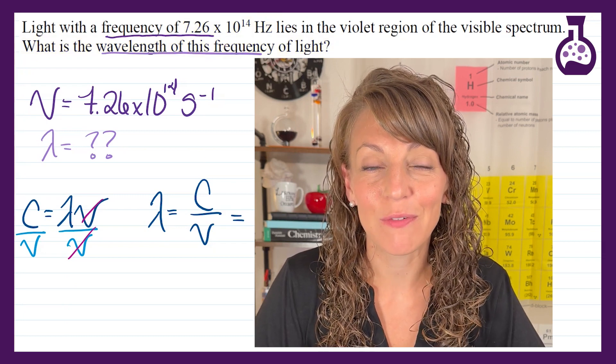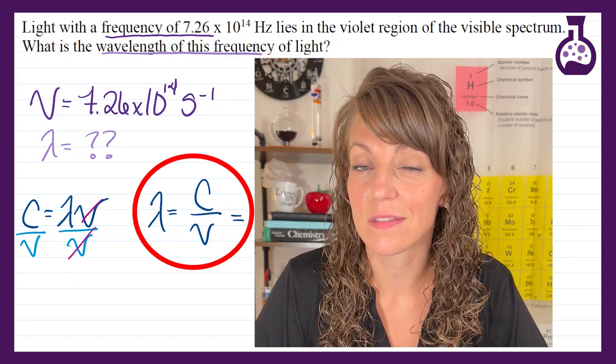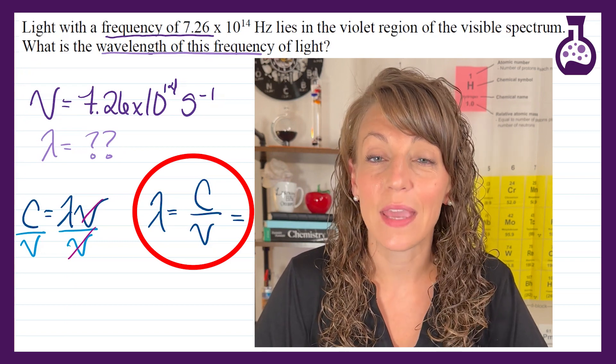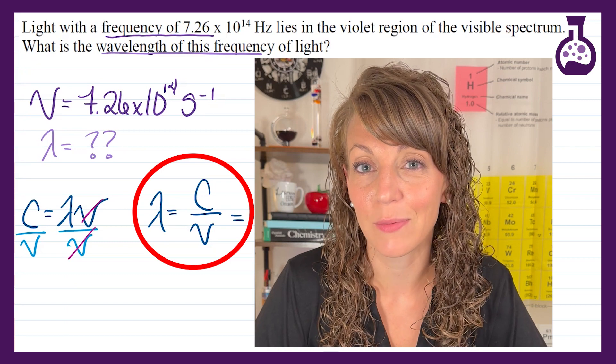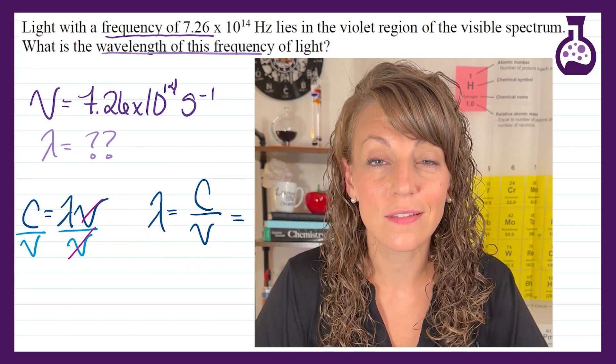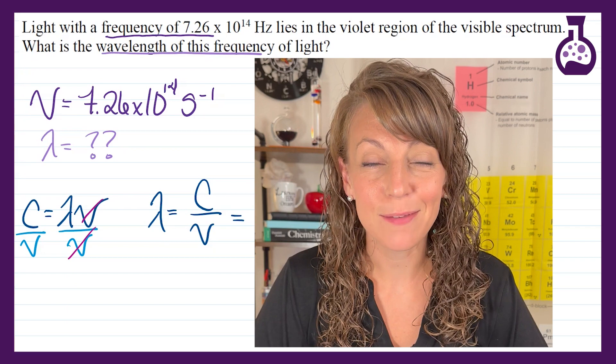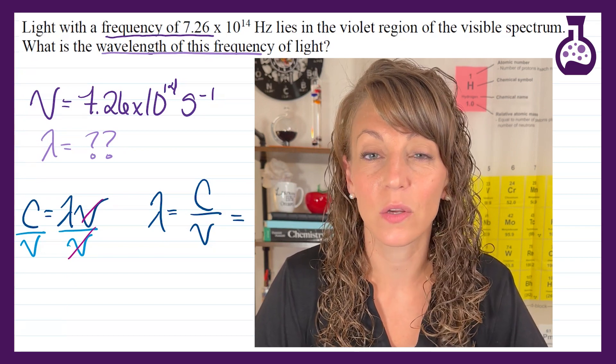So we've rearranged our speed of light equation to solve for wavelength or lambda. So we have the speed of light c divided by nu, our frequency. Both these numbers are in scientific notation and we need to be able to plug them into our calculator quickly.